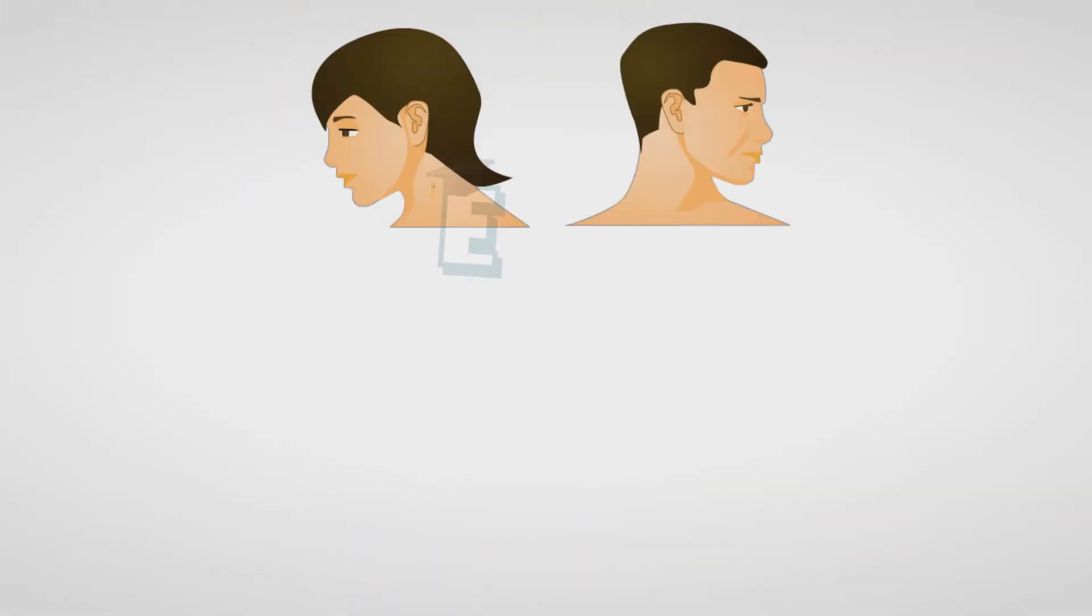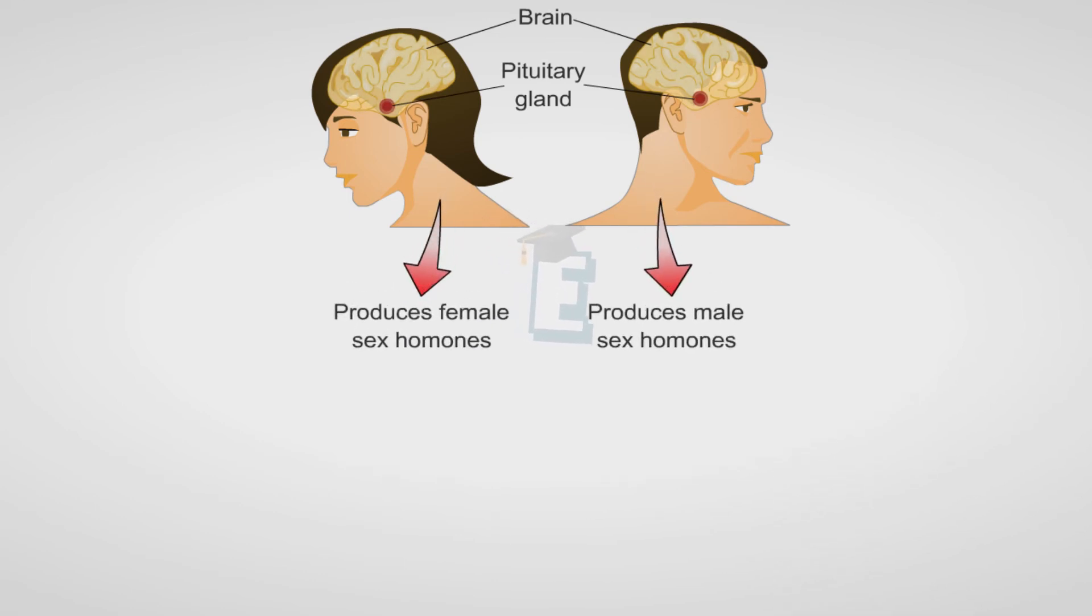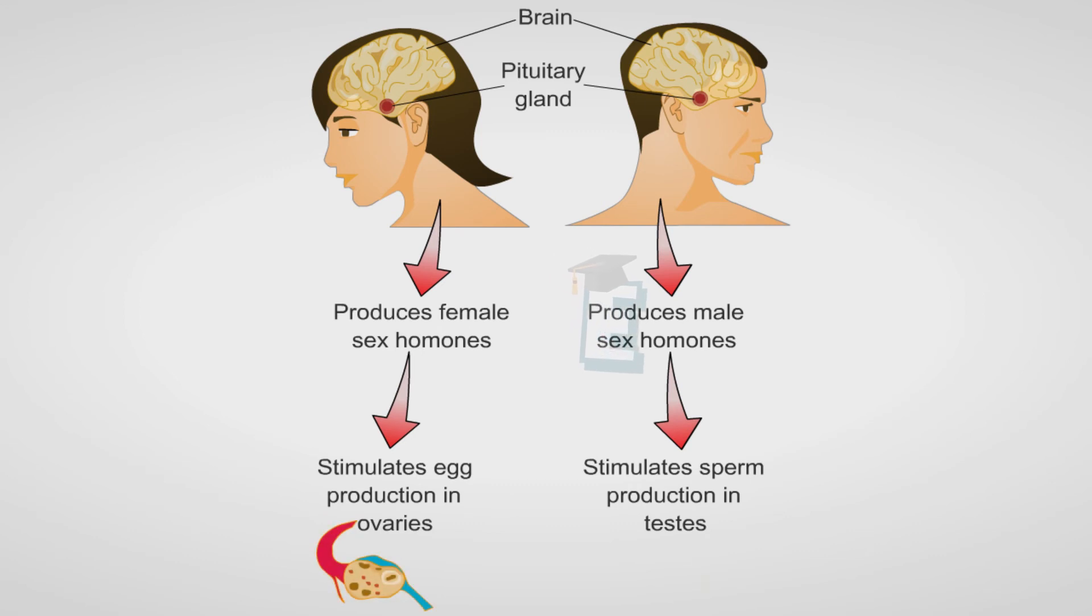The following is an example of the mechanism between the endocrine system and the reproductive system: when the pituitary gland in the endocrine system produces female and male sex hormones, which can stimulate the production of ovum in ovaries and sperm in testis.